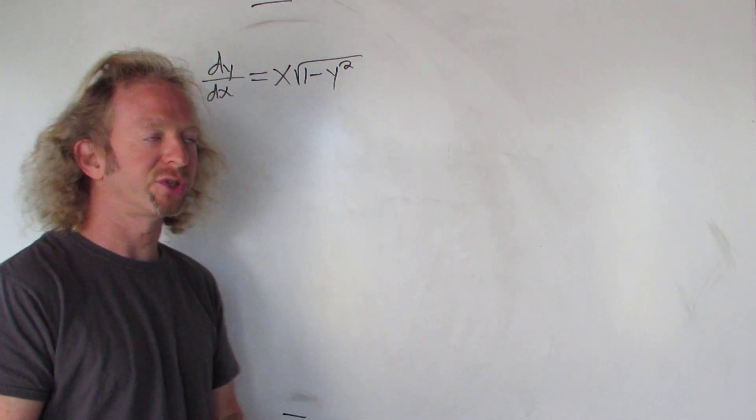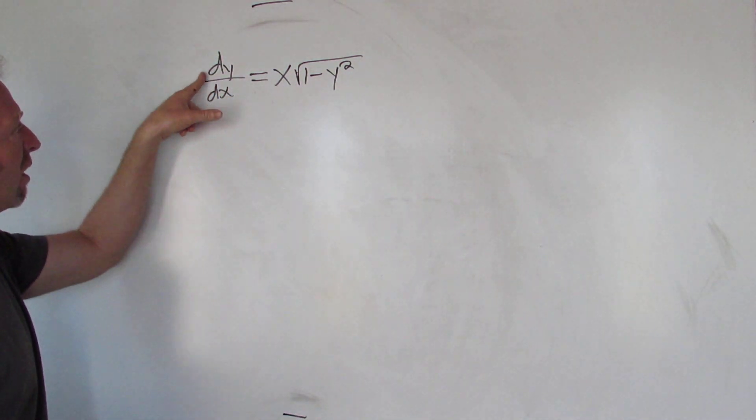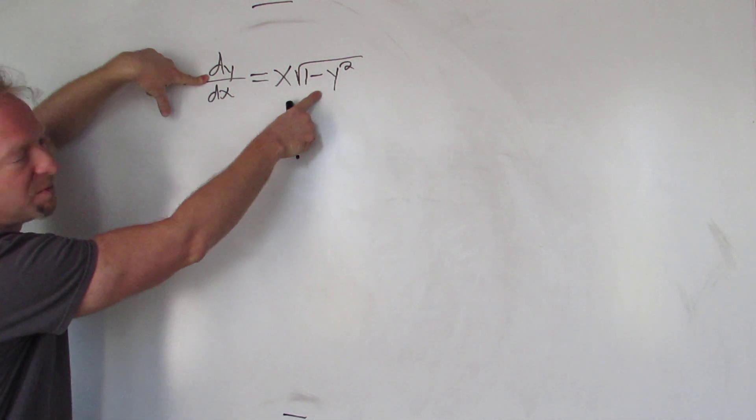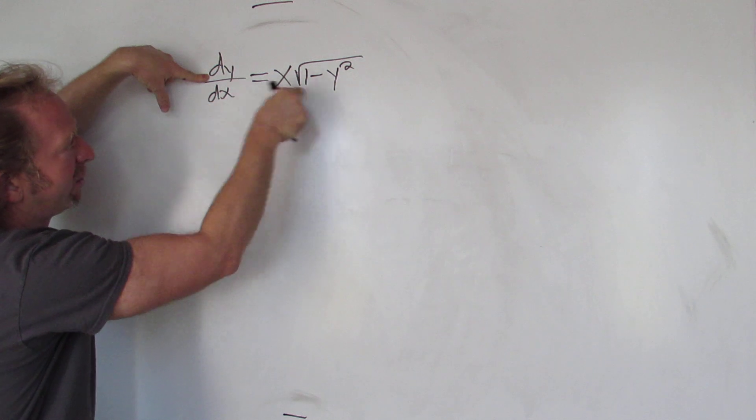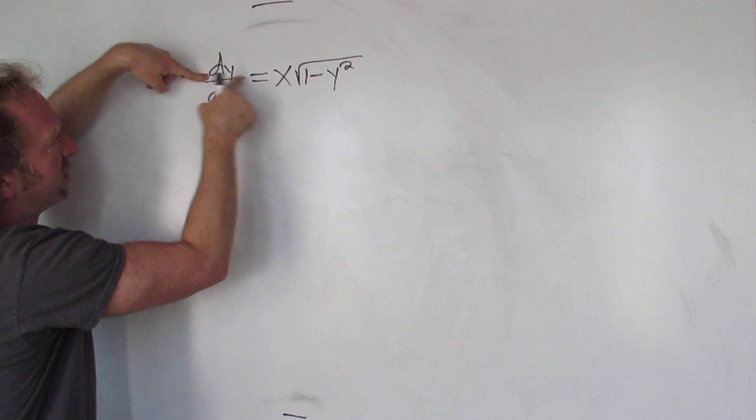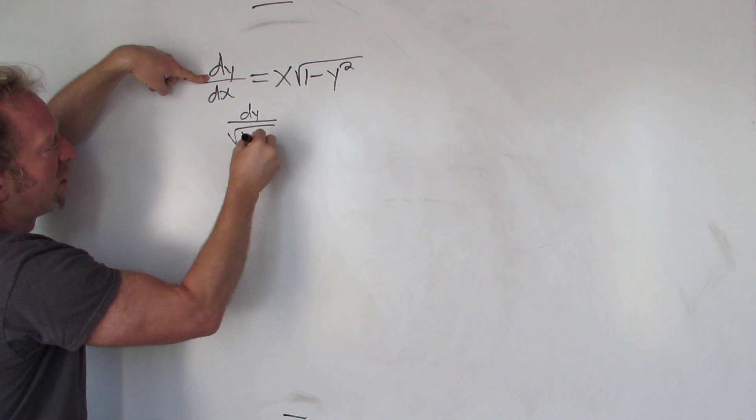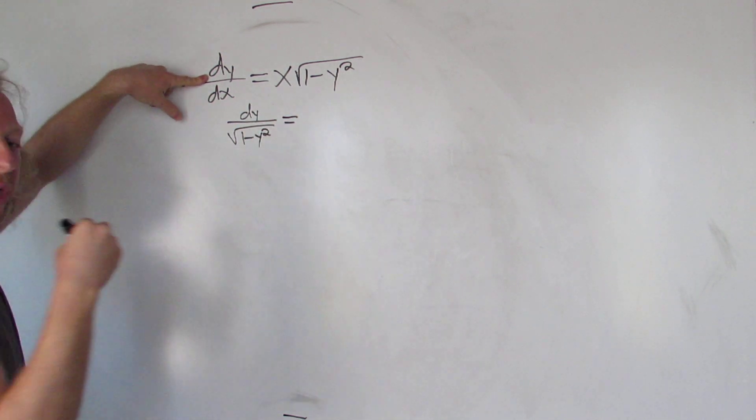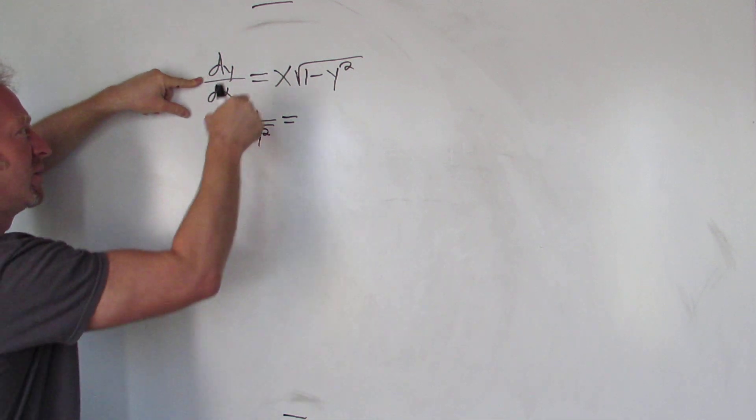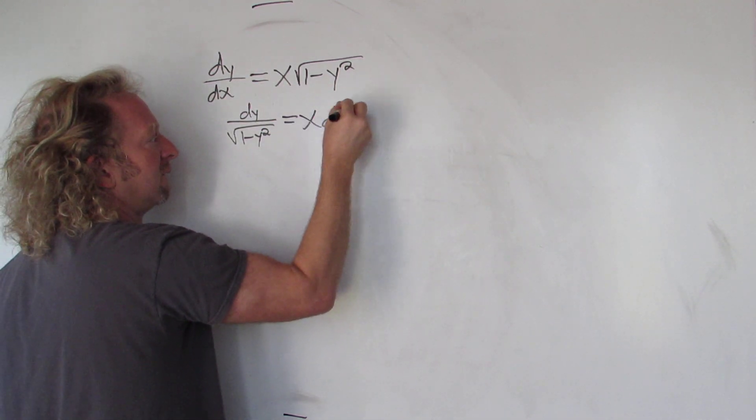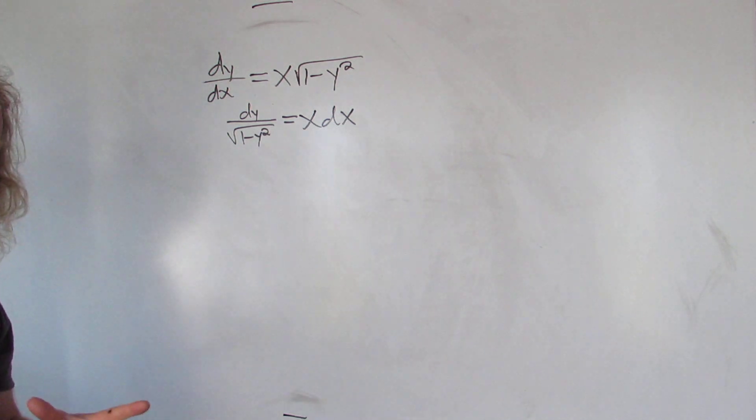In this case we already have the dy over here, so we'll start by dividing by this piece and putting it over here, and then multiplying by the dx. So we'll divide by this so we get dy over the square root of 1 minus y squared, and now we're going to multiply by the dx. So it'll be x dx.